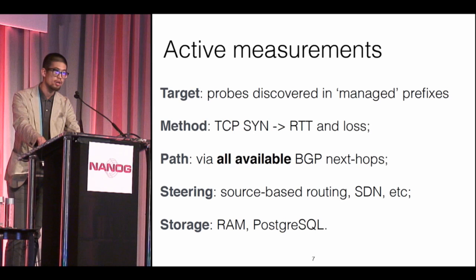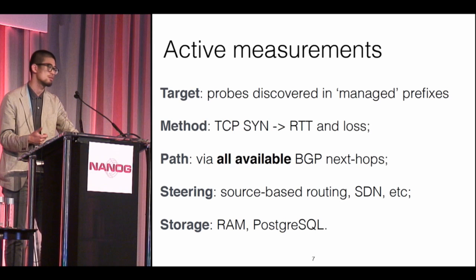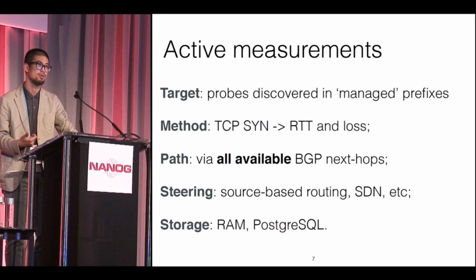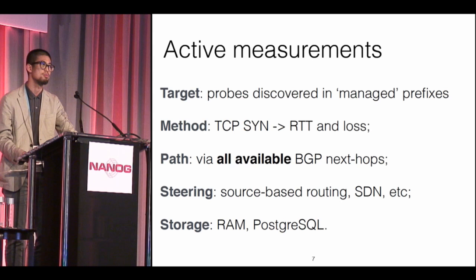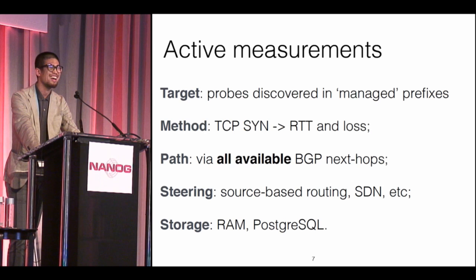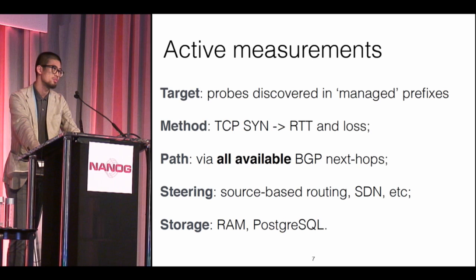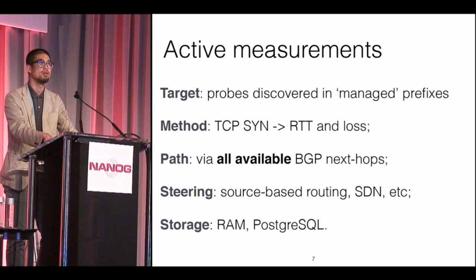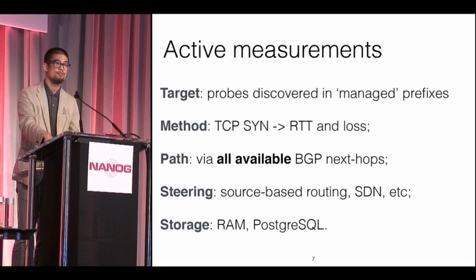Once the prefixes of importance are selected, we are going to measure them. First, we find IP addresses that respond to active measurements. One common trick in topology measurement is to look into traffic traces and DNS request logs to find IP addresses hosting open services, so we can ping with TCP SYN or similar to measure delay and loss. One uncommon operation involved here is that we steer measurement traffic via all possible BGP next hops, which can be done with source-based routing mechanisms like segment routing or more flexible SDN flavors.